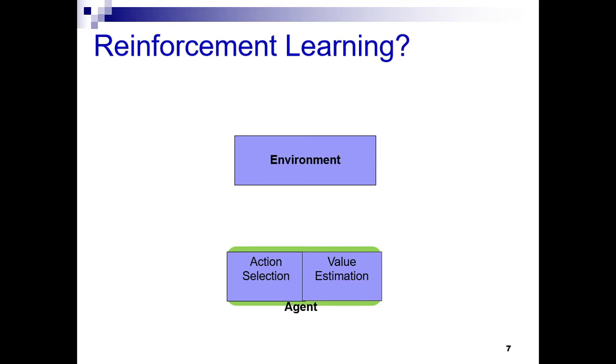In reinforcement learning, as an agent receives a state, it selects an action. Depending on the selected action, the agent will get rewarded or penalized. This results in a state transition. The process continues until the agent learns.